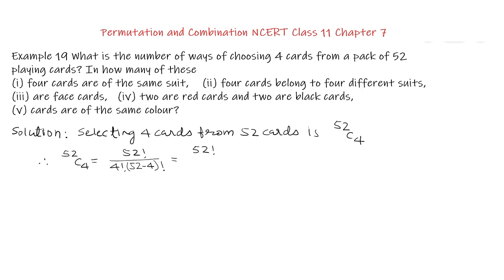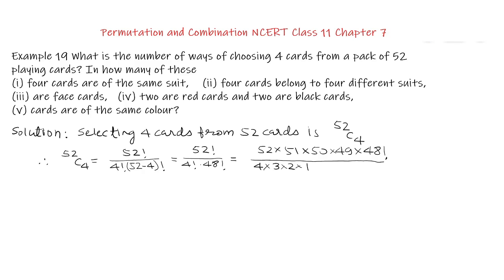This is equal to 52 factorial upon 4 factorial into 48 factorial. This is equal to 52 × 51 × 50 × 49 × 48 factorial, upon 4 factorial written as 4 × 3 × 2 × 1 × 48 factorial. We cancel 48 factorial. Then 4 of the denominator cancels 52 of the numerator for 13 times, and 3 of the denominator cancels 51 of the numerator for 17 times.